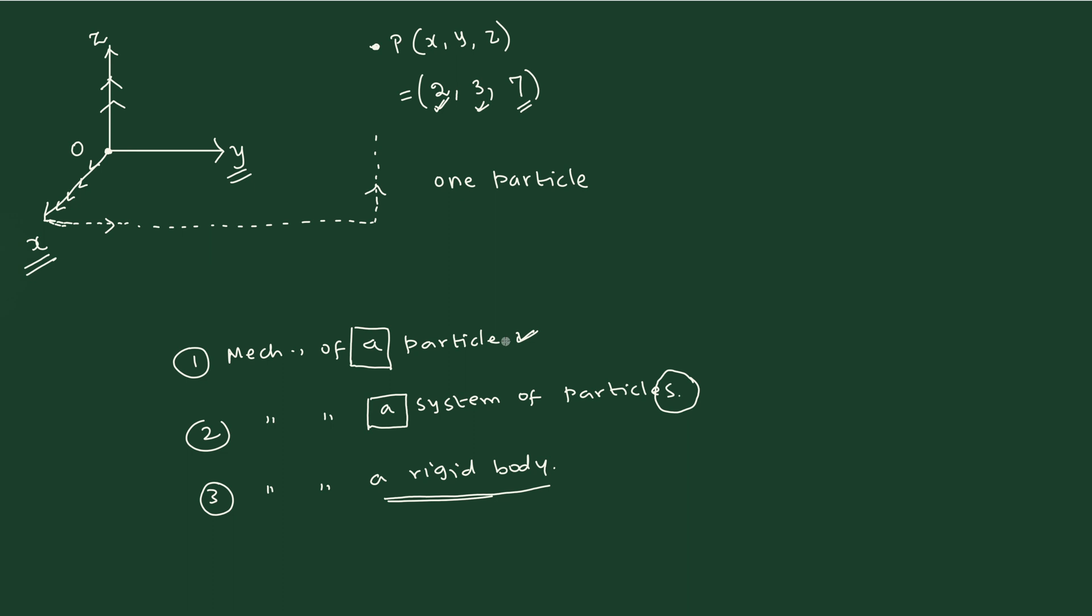Whether you are going to consider the motion of the earth around the sun, then we say that the sun is a particle and the earth is a particle, irrespective of however large it is. So that concept is very important. When you are discussing the particle, the size and the shape is not there. When you are bringing the size and the shape, we use the word mechanics of a rigid body.